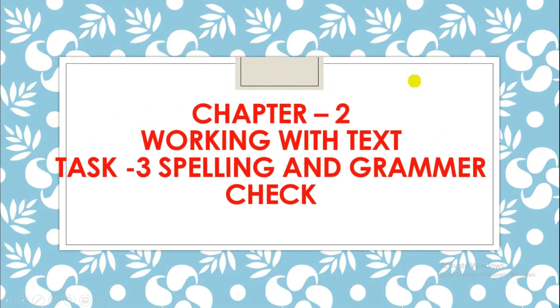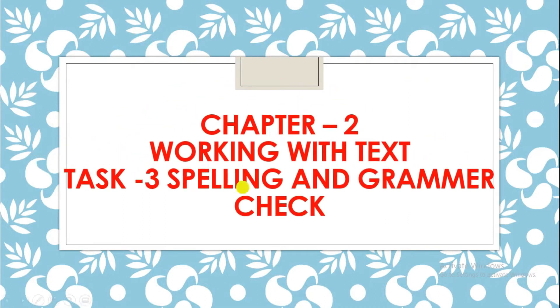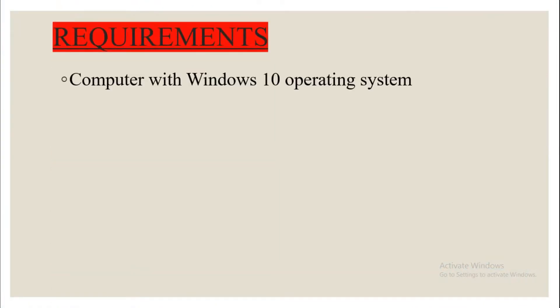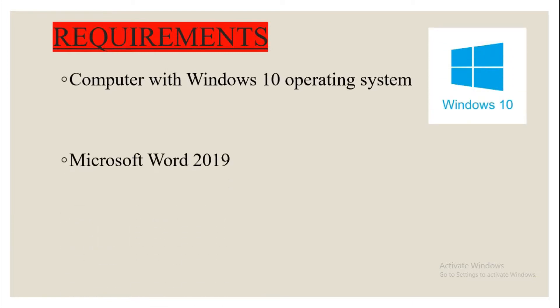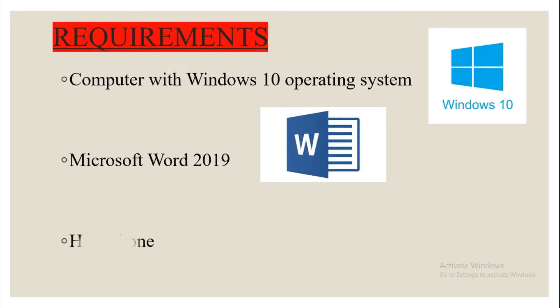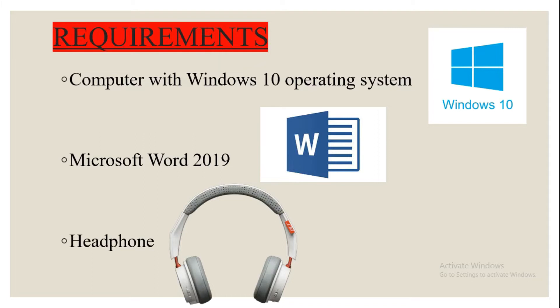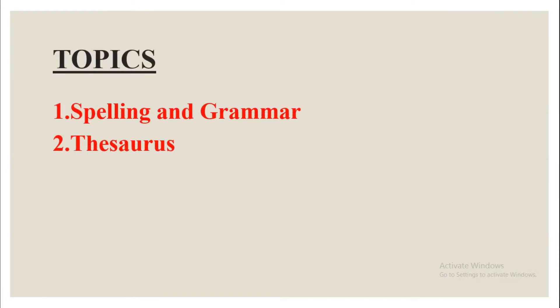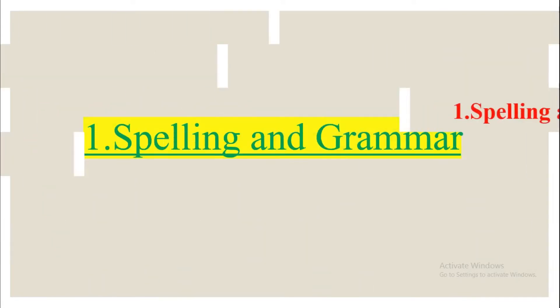Good morning everybody. Today we are going to discuss Task 3: Spelling and Grammar Check of Chapter 2, Working with the Text. In this chapter we will be making use of Microsoft Word software. The requirements are: a computer with Windows 10 operating system, Microsoft Word 2019, and headphones. The topics we are going to cover are spelling and grammar, and thesaurus.